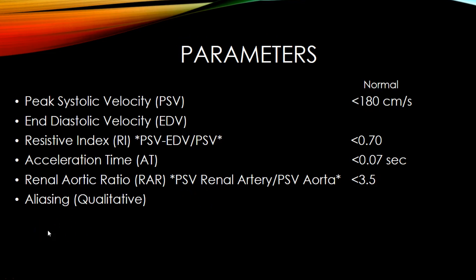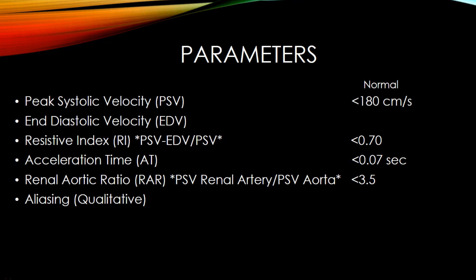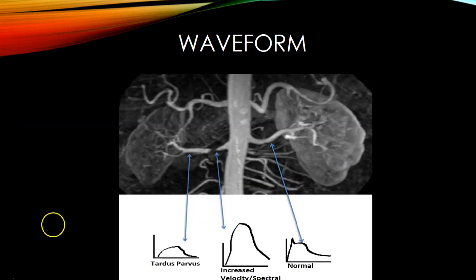The diagnostic parameters for renal artery stenosis include: peak systolic velocity — normal is below 180 centimeters per second; diastolic velocity — there should be good diastolic flow, and absence or reversal is abnormal; resistive index of 0.70 and below is normal, measured in the intraparenchymal arteries; acceleration time below 0.07 seconds is normal; and the renal-aortic ratio — dividing renal artery PSV by aortic PSV — should be less than 3.5. Also look for aliasing at sites of stenosis.